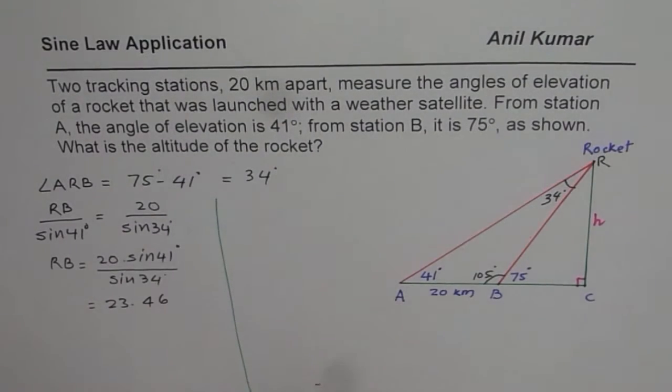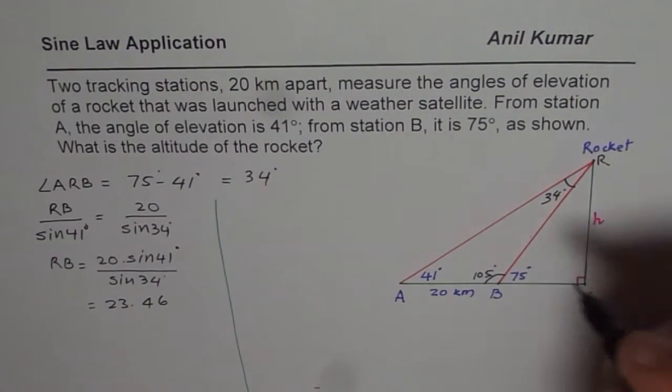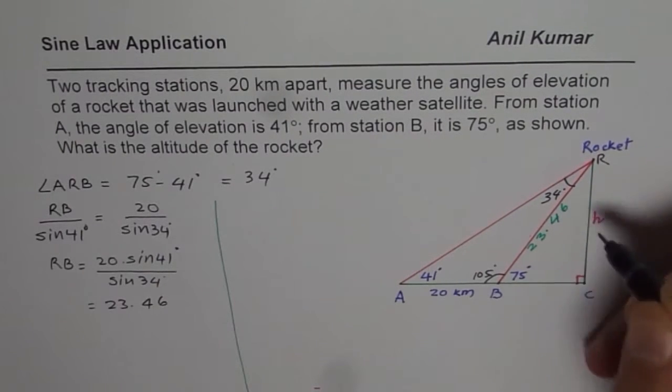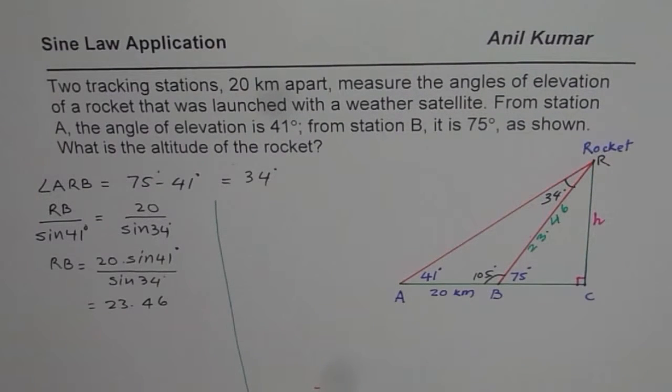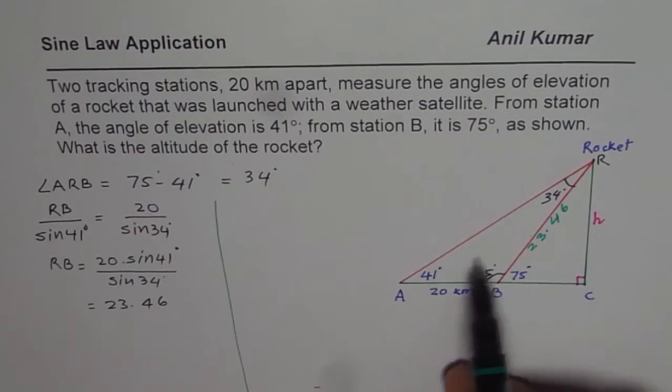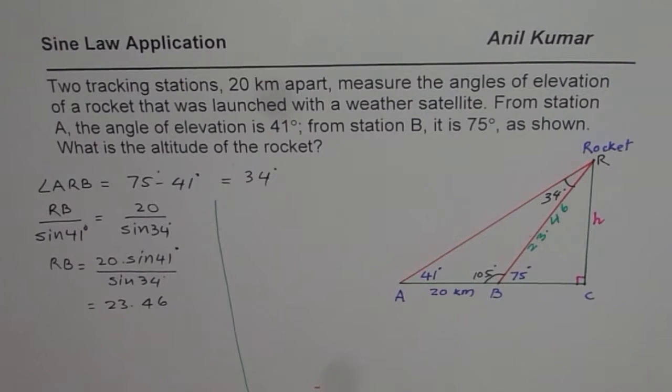Now to find, so now we know this side, which is 23.46. Now since, you know, estimate 34, 20, 41 should be greater than 20, so that seems to be the correct solution. So you should check your answer also.